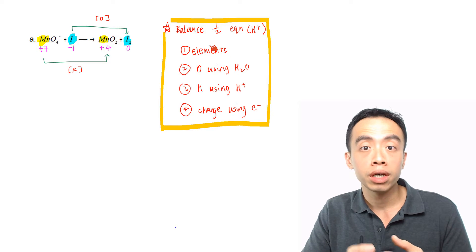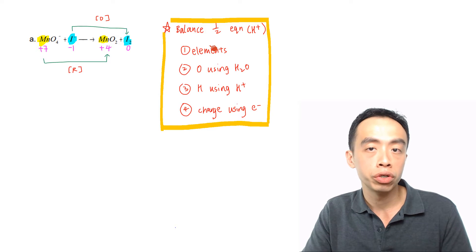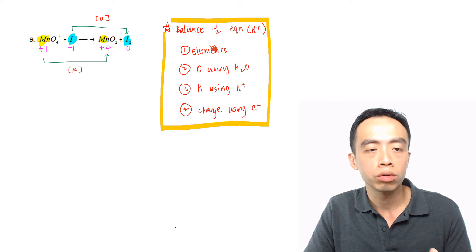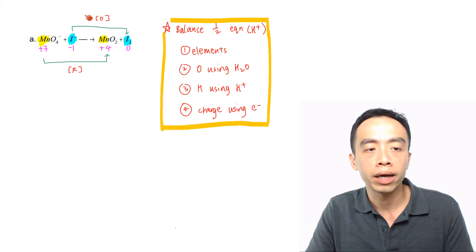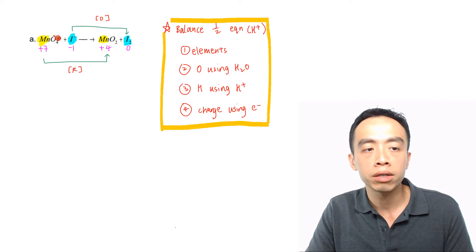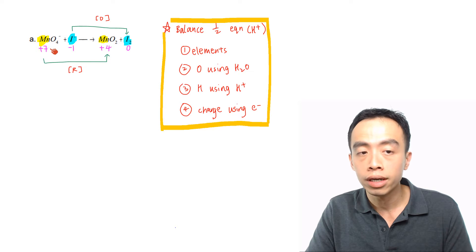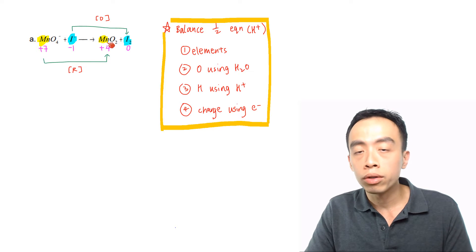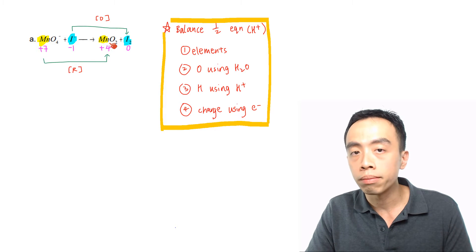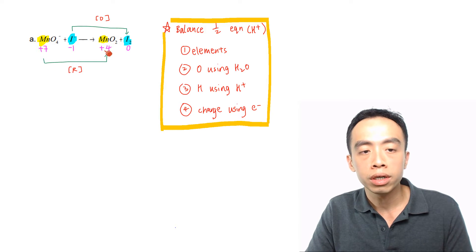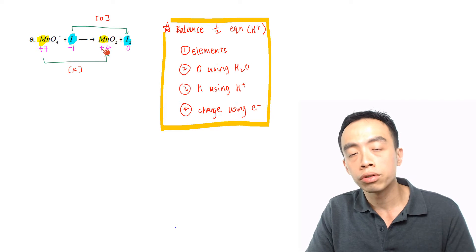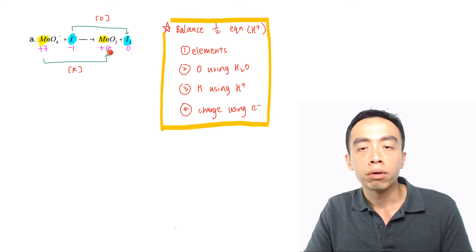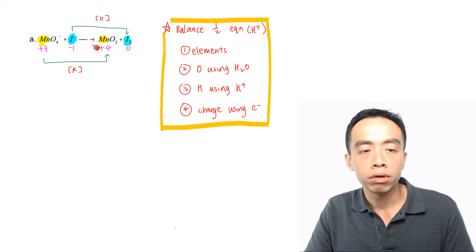First, I have to decide who gets oxidized and reduced, and split them up into two half equations. If I look at MnO4-, the oxidation state for manganese is +7, going to MnO2 where the oxidation state for Mn is +4. So this is a reduction — a decrease in oxidation state from +7 to +4.